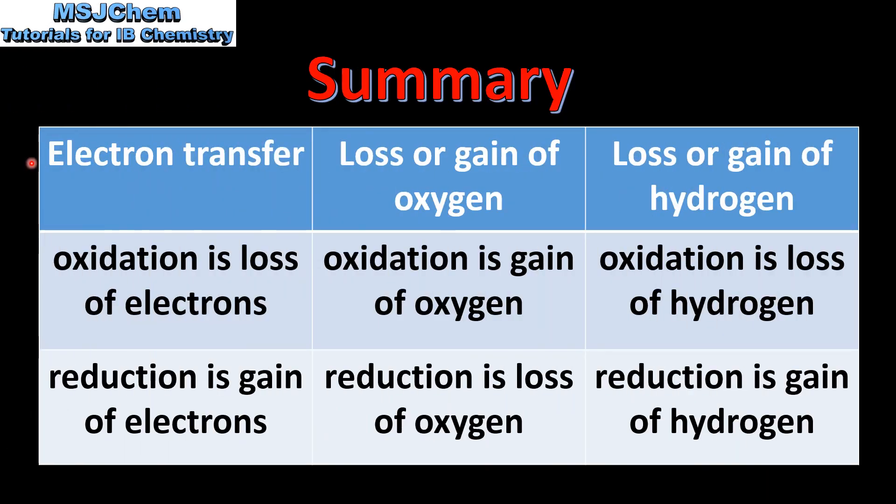Let's end with a summary. Electron transfer: oxidation is loss of electrons, reduction is gain of electrons. Loss or gain of oxygen: oxidation is gain of oxygen and reduction is the loss of oxygen. Loss or gain of hydrogen: oxidation is the loss of hydrogen and reduction is the gain of hydrogen.